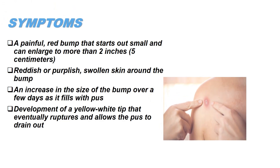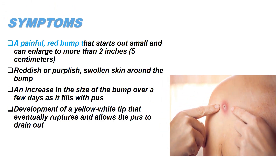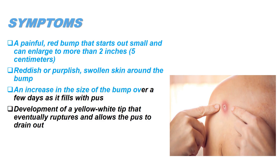Symptoms. A painful, red bump that starts out small and can enlarge to more than 2 inches (5 centimeters). Reddish or purplish, swollen skin around the bump. An increase in the size of the bump over a few days as it fills with pus. Development of a yellow-white tip that eventually ruptures and allows the pus to drain out.